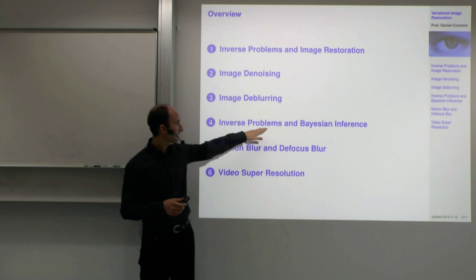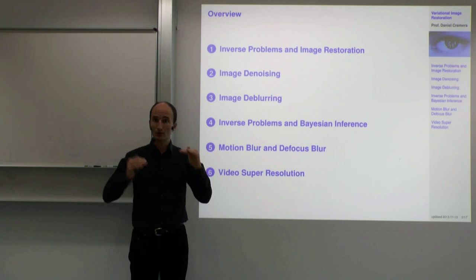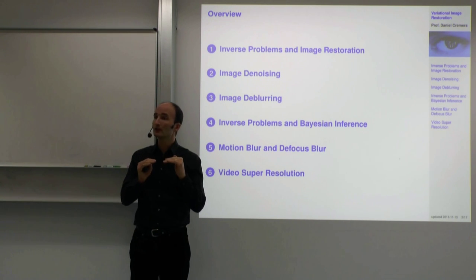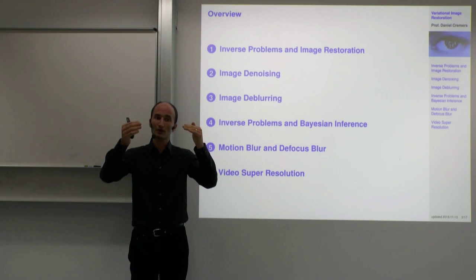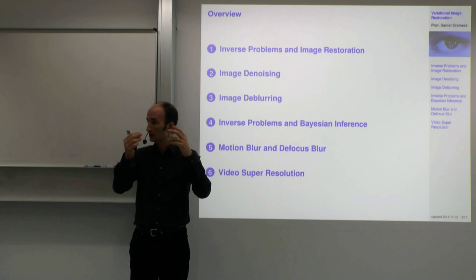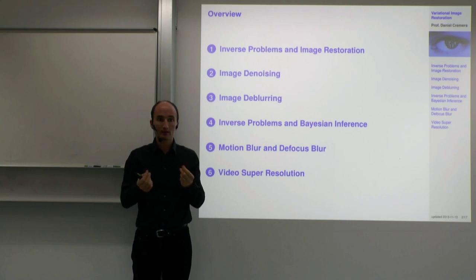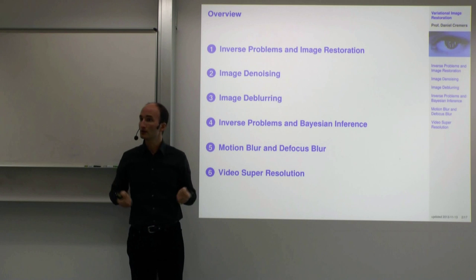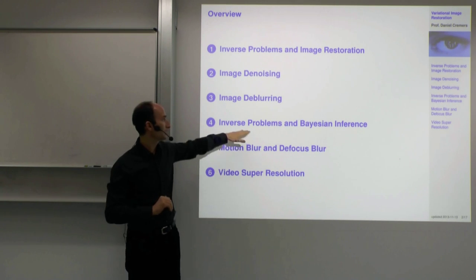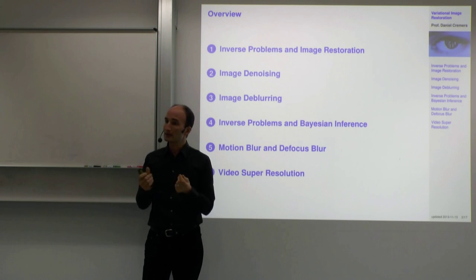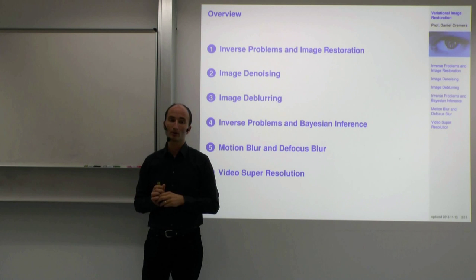We'll also see how you can formalize inverse problems and derive appropriate functionals from a statistical inference point of view. In that sense, today we'll go one level higher. In the last classes we talked first about image filtering, PDE-based filtering with differential equations. Then we saw that you can set up variational cost functions where the gradient descent is the diffusion. And today we'll go one step higher and check where cost functions come from.